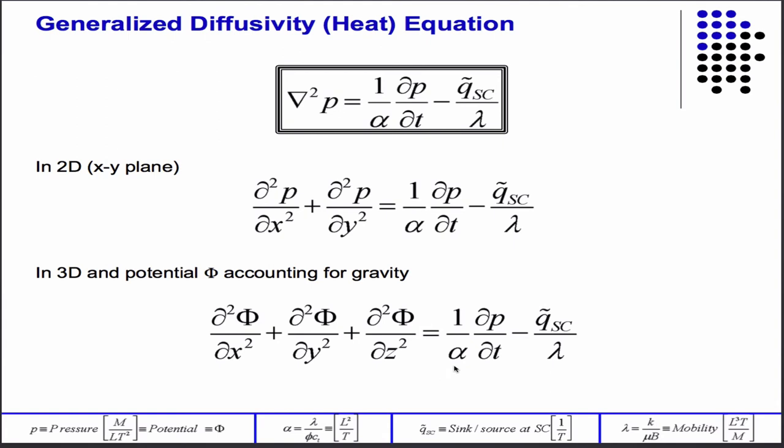In 3D, it's similar, except now instead of pressure, we've used the symbol phi. So phi just implies that there's a gravity term. It's the pressure plus the term that accounts for gravity.